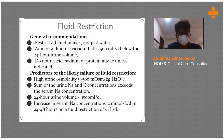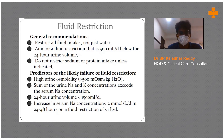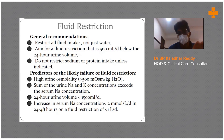Restrict all fluid intake — not just water. Aim for a fluid restriction that is 500 ml per day below the 24-hour urine volume, so maintain your input-output chart strictly. Do not restrict sodium or protein intake unless indicated. Predictors of likely fluid restriction failure include: urine osmolality more than 500 mOsm/kg, urine sodium + potassium exceeding serum sodium, 24-hour urine volume less than 1500 ml/day, and serum sodium increasing less than 2 mmol in 24 hours despite restricting to less than 1 liter per day.